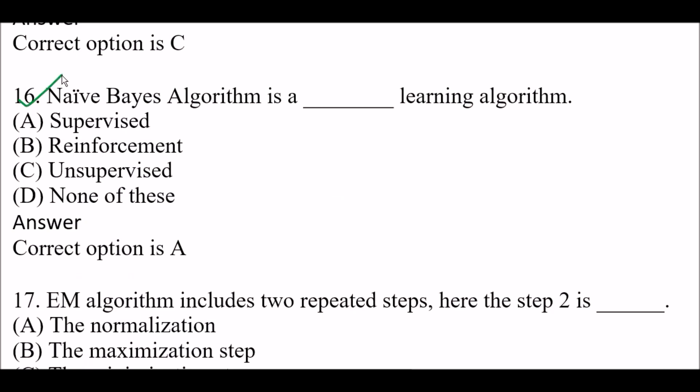Next question: Naive Bayes algorithm is a blank space learning algorithm. Option A: Supervised, Option B: Reinforcement, Option C: Unsupervised, Option D: None of these. Right answer is Option A — supervised learning. Naive Bayes algorithm is a supervised learning algorithm.